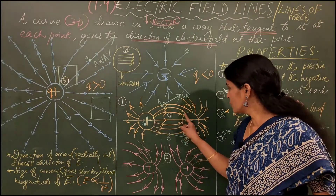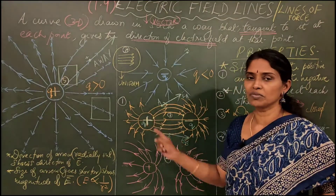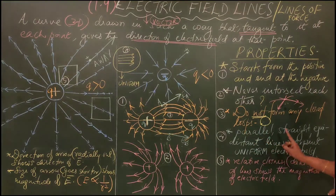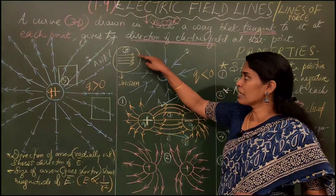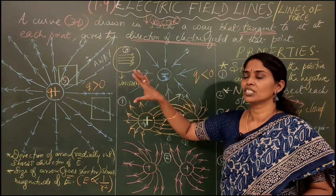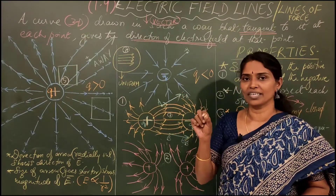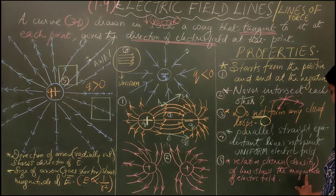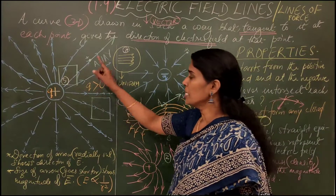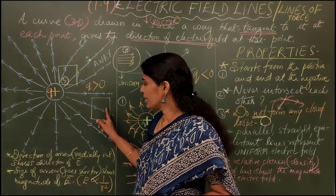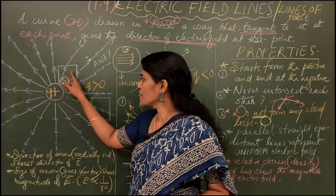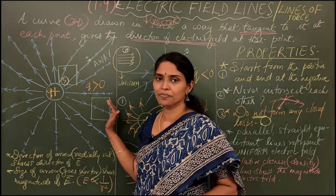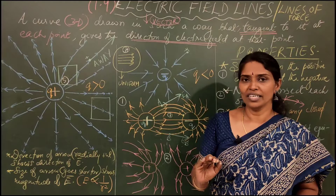Property 3 continued: lines start from positive and end at negative — they do not return from negative to positive, so no loop is formed. Property 4: parallel, straight, equidistant lines represent a uniform electric field. Property 5: the relative closeness or density of lines shows the magnitude of the electric field — more lines through an area means higher magnitude, fewer lines means lower magnitude.